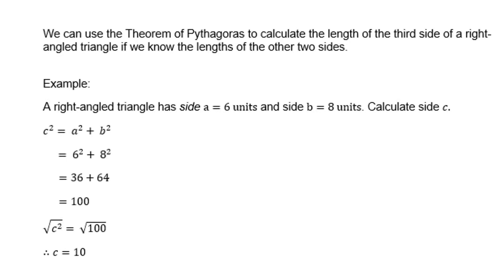We can use the theorem of Pythagoras to calculate the length of the third side of a right-angled triangle if we know the length of the other two sides. In a right-angled triangle, side a is 6 and side b is 8; calculate c. So c squared equals a squared plus b squared, which is 6 squared plus 8 squared, which is 36 plus 64, which is 100. Therefore, c is 10.